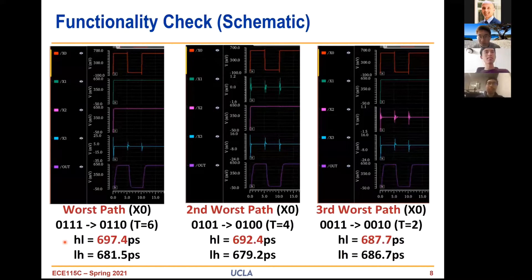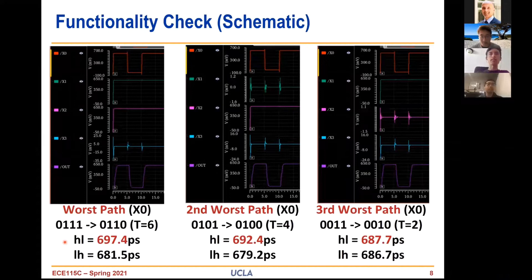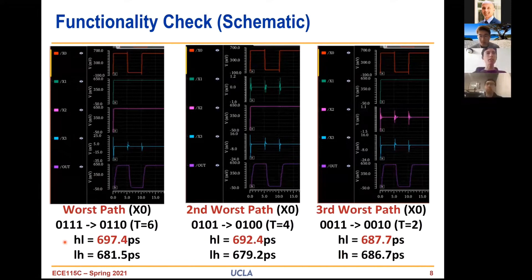These are our schematic critical paths. As mentioned, they all fall along the X0 path with various input vectors and different thresholds. The delays are slightly different because the inputs expose different amounts of intrinsic capacitances between transistors. We pushed the schematic close to 700 picoseconds since we didn't have to worry about parasitics.